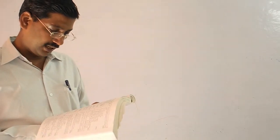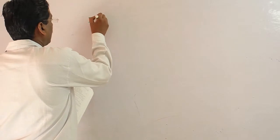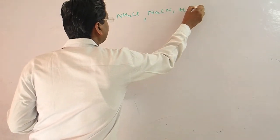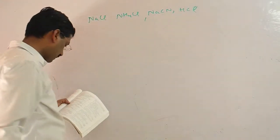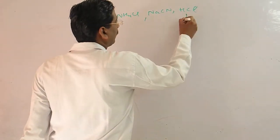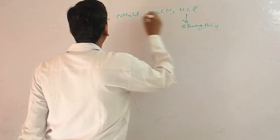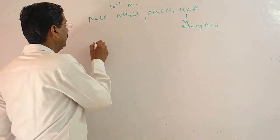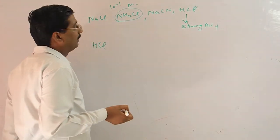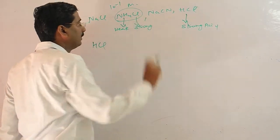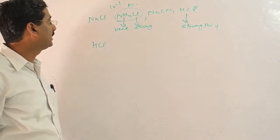So this is the question. The pH of 0.1 molar solution of salt increases in the order. In this case you have NH4Cl, NaCN, NH4CN, and HCN. You will have less pH. This is NH4OH and HCl salt. So the pH will be acidic.